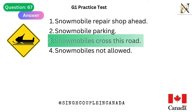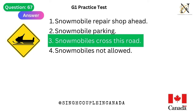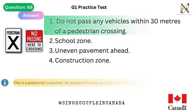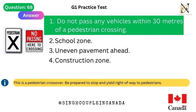Question 68. This traffic sign means: 1. Do not pass any vehicles within 30 meters of a pedestrian crossing. 2. School zone. 3. Uneven pavement ahead. 4. Construction zone. Answer is 1. Do not pass any vehicles within 30 meters of a pedestrian crossing — this is a pedestrian crossover. Be prepared to stop and yield right-of-way to pedestrians.